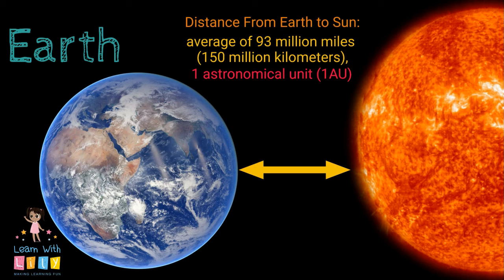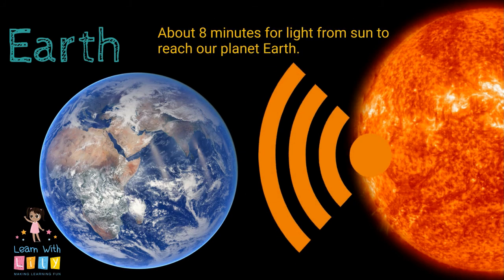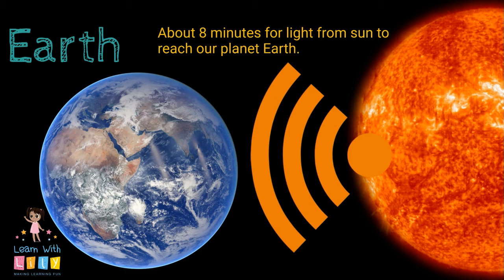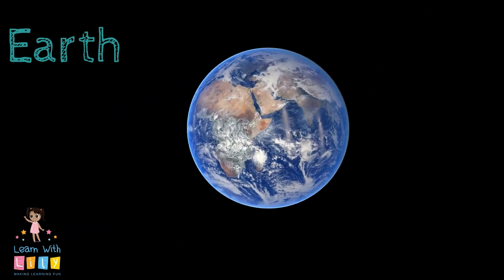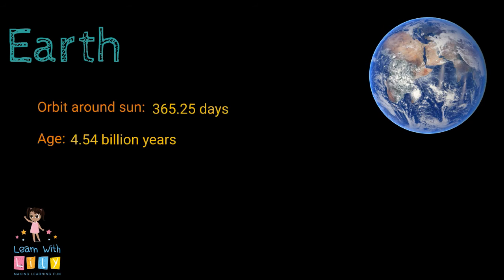Do you know how far the Earth is from the Sun? It's an average of 93 million miles away. That's 150 million kilometers. That's called an astronomical unit. It takes eight minutes for light from the Sun to reach our planet. How long does it take to orbit the Sun? It takes 365.25 days.